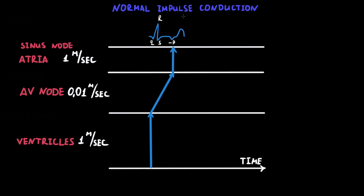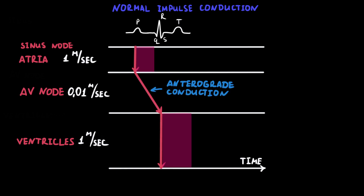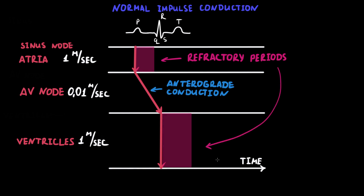In retrograde conduction, on ECG we see a retrograde negative P-wave after the QRS. QRS can be changed in case of ventricular origin, or the same as usual in case of AV nodal origin. Also, the atria and ventricles have a refractory period during which they cannot be stimulated. This refractory period may establish a basis for atrioventricular dissociation.